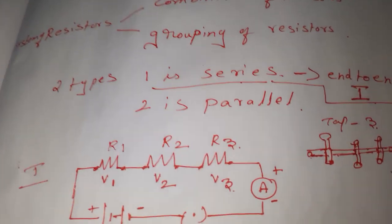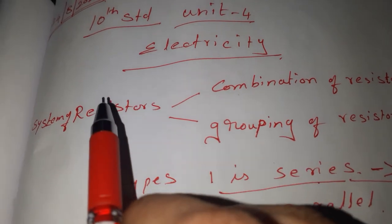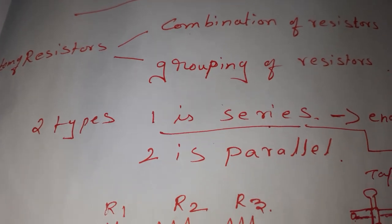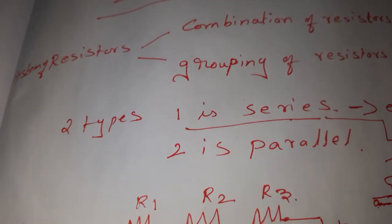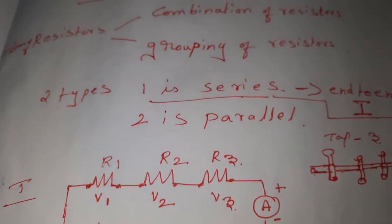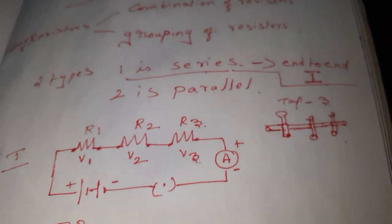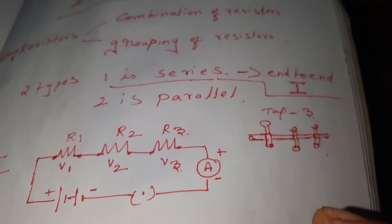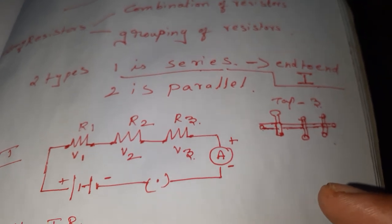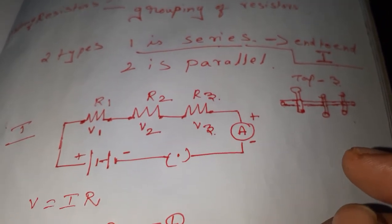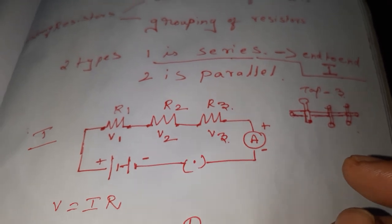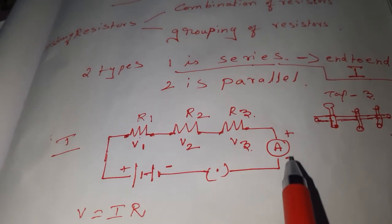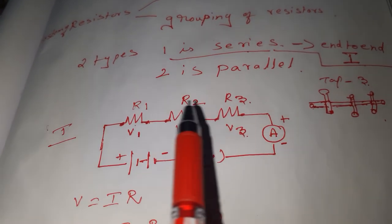Once again, resistors — a system of resistors, combination or grouping of resistors — is called a system of resistors. There are two types; in this class you are going to learn two types. One is series: an end-to-end connection where the current flowing through all of them is the same. The second one is parallel connection. In the series connection, resistances R1, R2, R3 are connected end to end and the current flowing through them is the same.